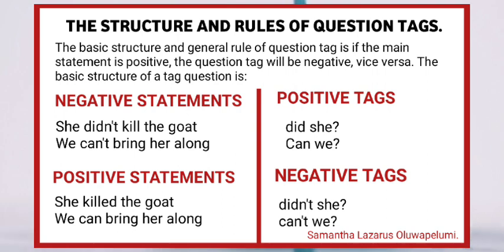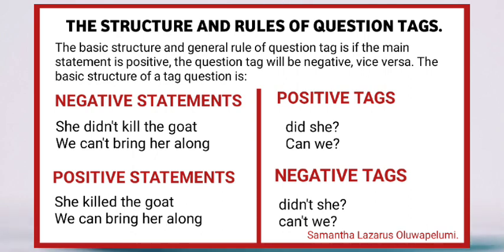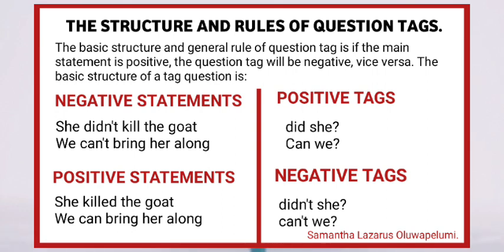For positive statements taking the negative tag, we have: 'She killed the goats. Didn't she?' and 'We can bring her along. Can't we?' The positive statement is 'she killed the goats' — the negative tag is 'didn't she?' 'She killed the goats' is positive because it doesn't connote negativity; we can't see any word denoting negativity. The same explanation goes for 'We can bring her along. Can't we?' — this statement is positive, taking the negative tag.